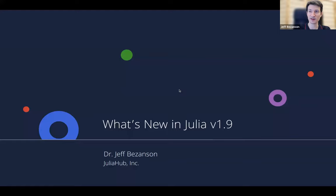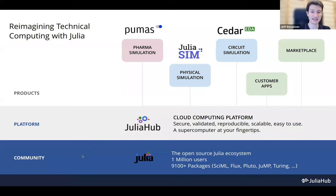But first, before I get into that, just a little bit about what we do at Julia Hub. Here we develop things at kind of three levels of abstraction, if you will. The bottom layer is the Julia language and open source community, where we do a lot of the development work, although not all of it. And as you might guess, that's where I spend most of my time.